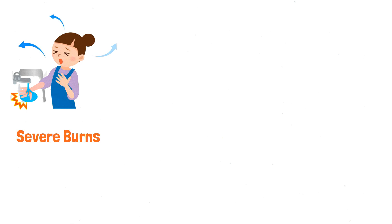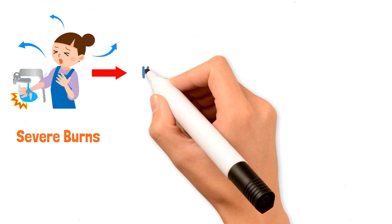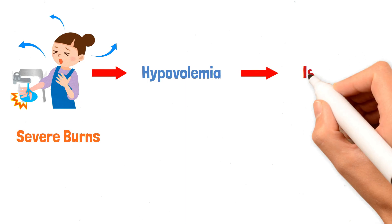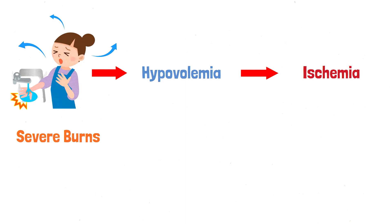During severe burns, the patient becomes hypovolemic — blood volume drops, meaning there isn't enough blood to transport oxygen. The body detects this emergency state and diverts remaining blood volume into critical organs to ensure survival, which means less blood is provided to the gastric mucosa. The gastric mucosal cells become ischemic and cannot perform their normal duties. The protective barrier breaks down, and this is when Curling ulcers occur. Ulcers caused by systemic conditions like this are called stress ulcers.